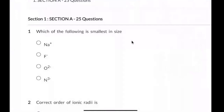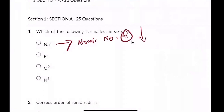So all these are isoelectronic species — all these have 10 electrons. As the atomic number increases, size decreases. The atomic number here is 11, and again, atomic number increase leads to size decrease.